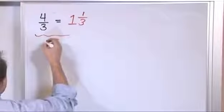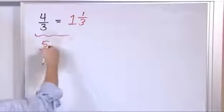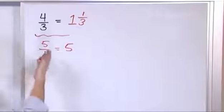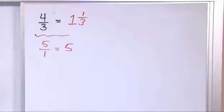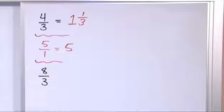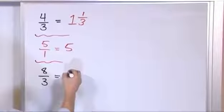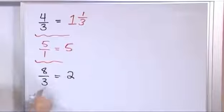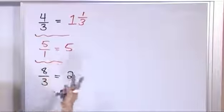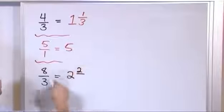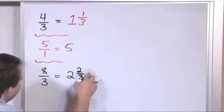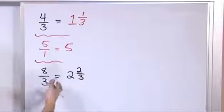Let's do a few more. First, five over one: five divided by one is five. It goes a whole number of times with no remainder, so I just stop. What if I have eight over three? How many times can three go into eight? It can go two times, because two times three is six. If I try three times, three times three is nine — that's too many. Eight minus six gives a remainder of two, written out of three. So the answer is two and two thirds.